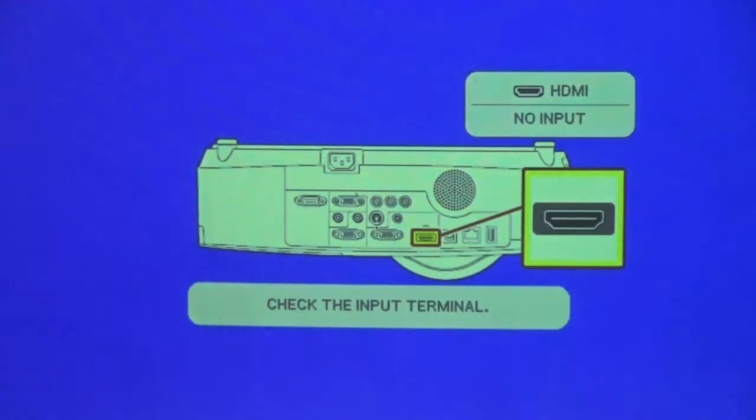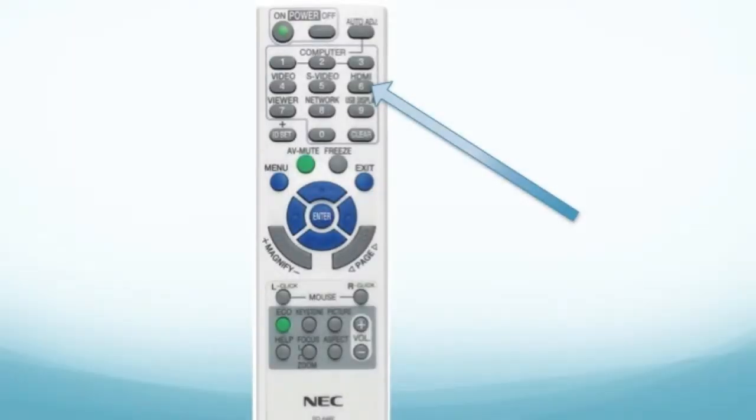If for whatever reason it does not say HDMI when it warms up, you do need to press the number 6 on the remote, it is clearly labeled HDMI. When you are in HDMI mode, everything else is controlled from the HDMI switcher that is located in your lectern.